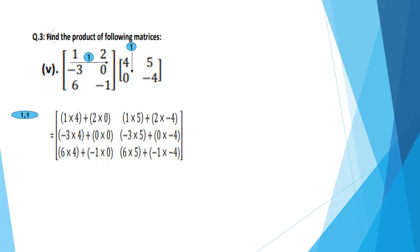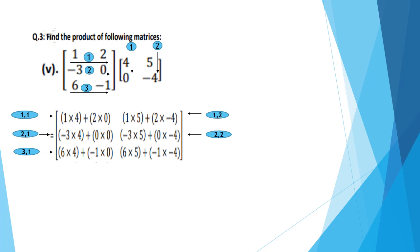First row with first column: 1 multiply 4, plus 2 into 0. First row second column: 1 into 5, plus 2 into minus 4. Now move to the second row. Second row first column, second row second column: minus 3 into 5, plus 0 into minus 4. Now move to row 3. Third row first column: 6 into 4, plus minus 1 into 0. Third row second column: 6 into 5, plus minus 1 into minus 4.